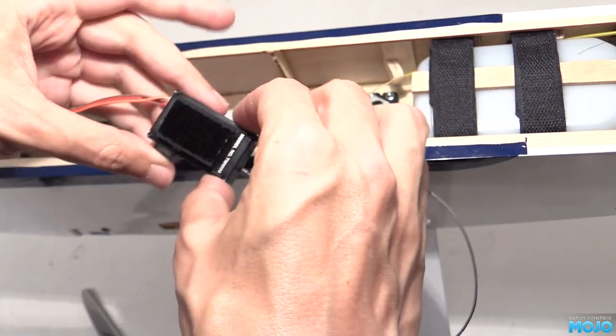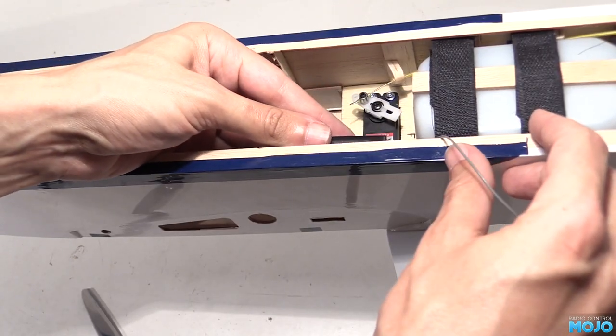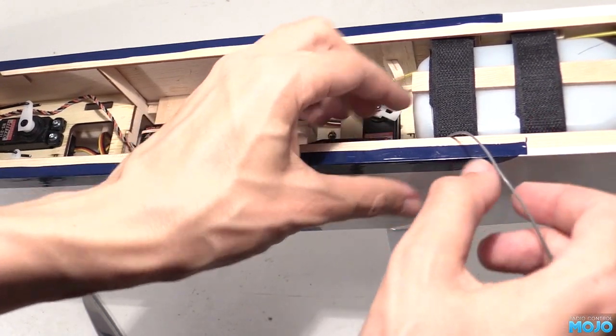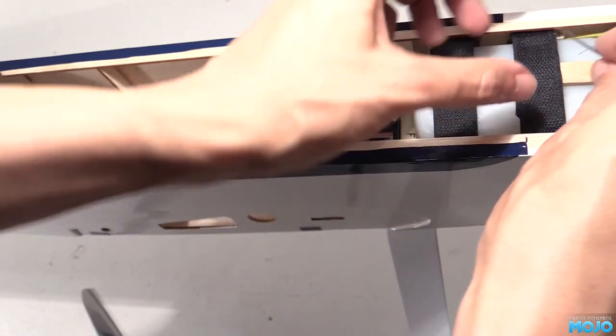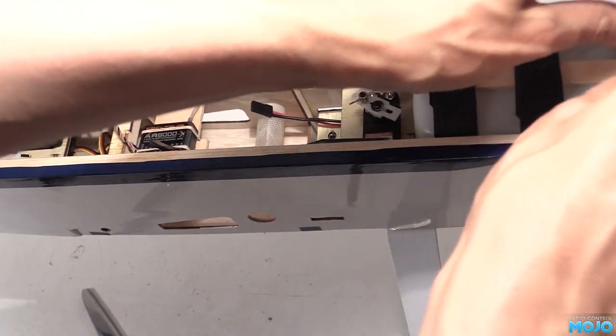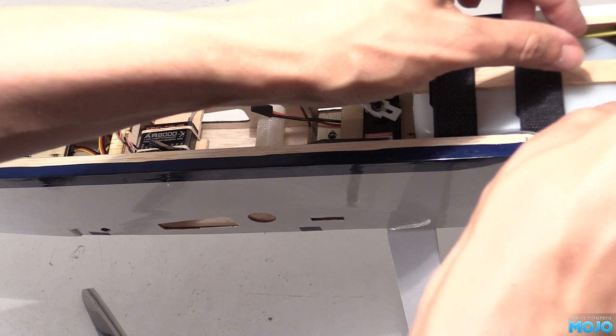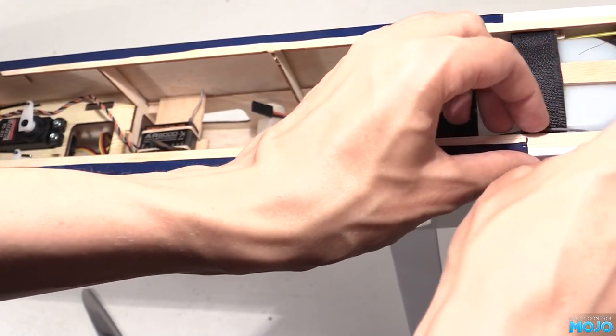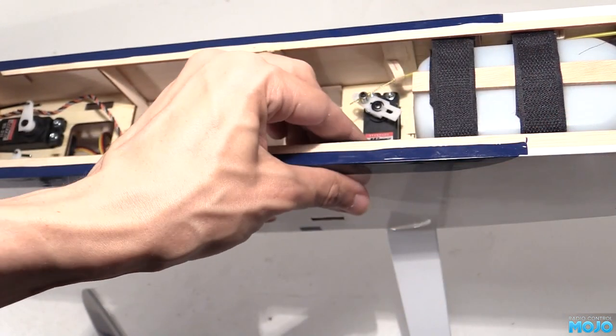The TM1000 needs to go in somewhere. I like to have it a good distance from the receivers. In this model I think up near the throttle servo will work quite nicely. Some more velcro for attachment. I tend to put the furry side on the removable bits so they don't pick up so much fluff.